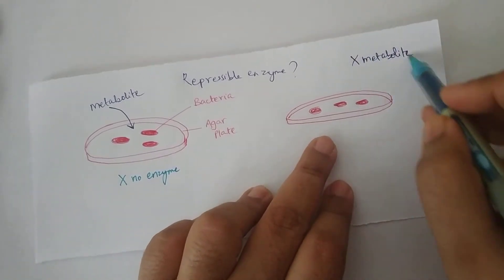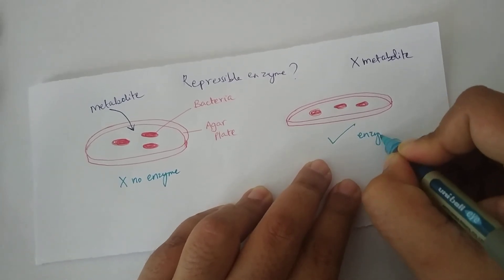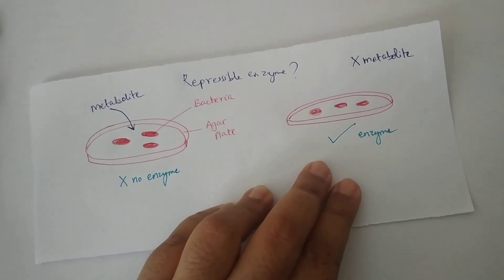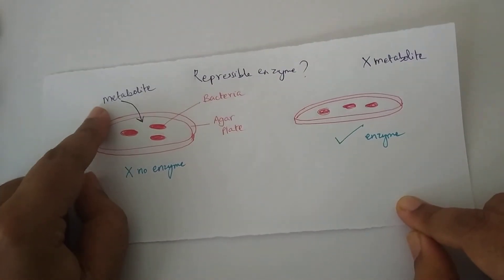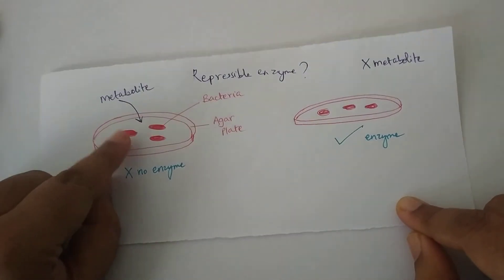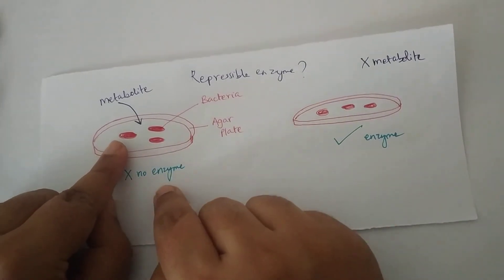Whereas when the metabolite is not there then the bacteria will produce the enzyme. So in this case what is happening? The presence of the metabolite is like an inhibitor. It is not letting the genes transcribe and translate and synthesize this enzyme protein.